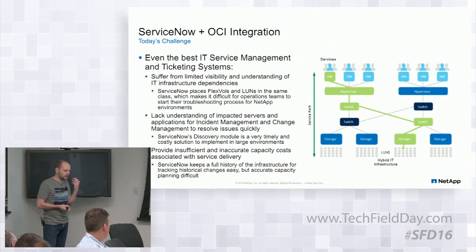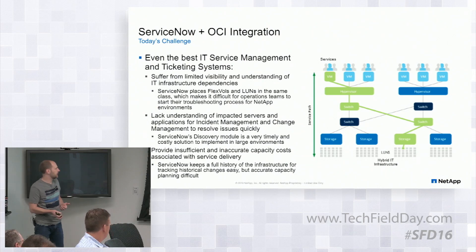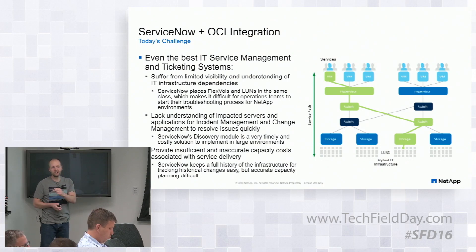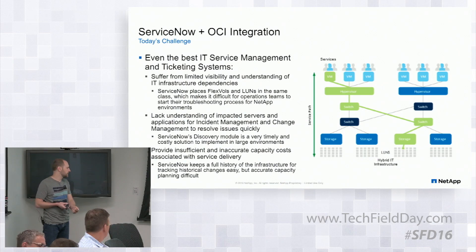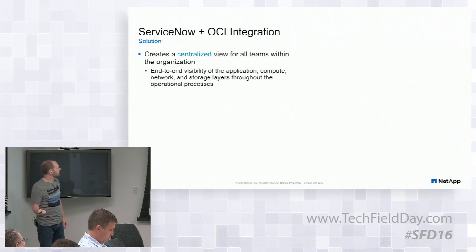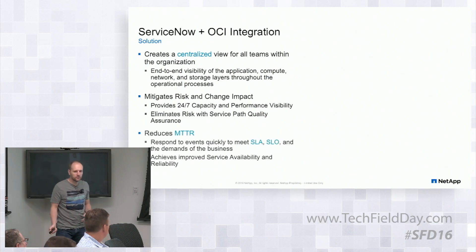ServiceNow, as shown on the chart here, uses FlexVols and LUNs and puts them in the same service class — there's no differentiation of those. So troubleshooting the environment with it isn't as easy as it could be. And using the discovery modules within ServiceNow, they're not very timely and there's also a cost component to those. OnCommand Insight is gathering all this data — it's got the detailed attributes of how those elements are pulled together and interconnected. We can feed that data straight into ServiceNow, making the accuracy of the ServiceNow CMDB far greater than it's ever been before.